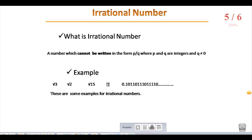Look at the example given here: root 3, root 2, root 15, pi, and another example 0.10110110110110 etc. These are some examples for irrational numbers. There are terminating and non-terminating, that is recurring, irrational numbers.